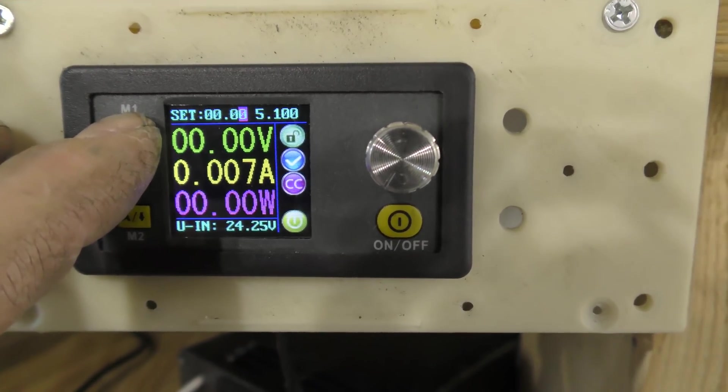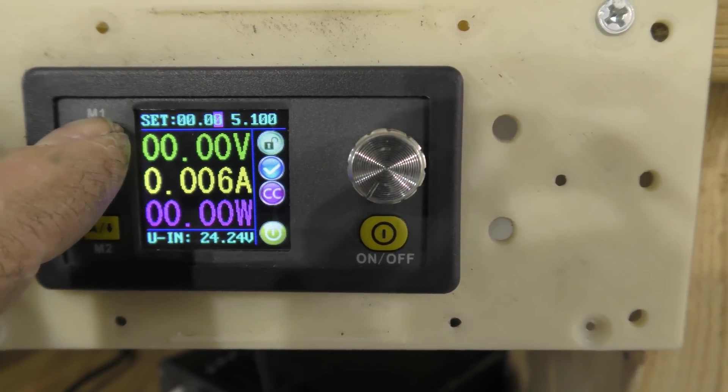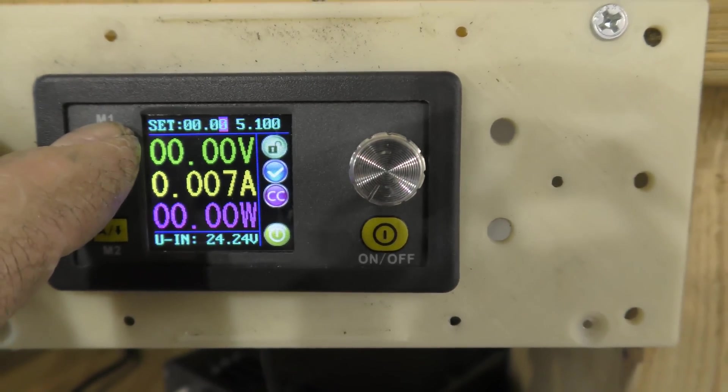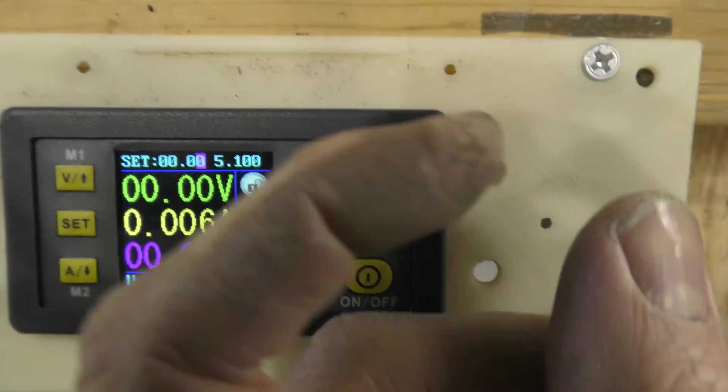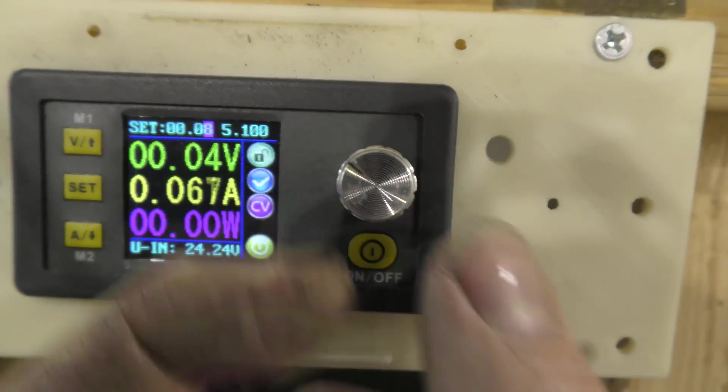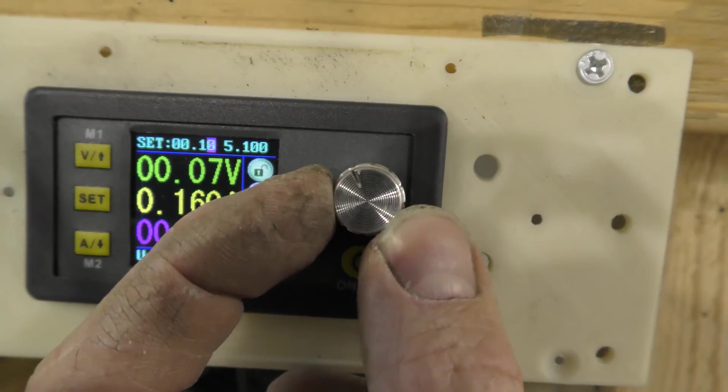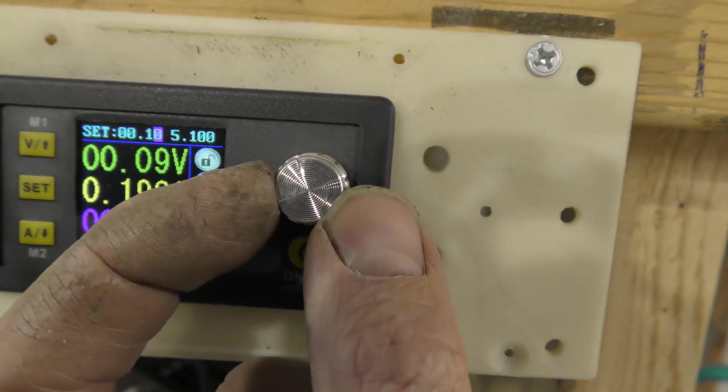So I can set it in the hundreds. So I can go real accurate if I wanted to. See that little purple. I can rotate this up. And as I rotate it, you can see my amps go up.